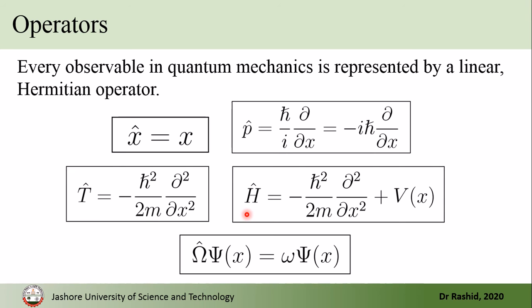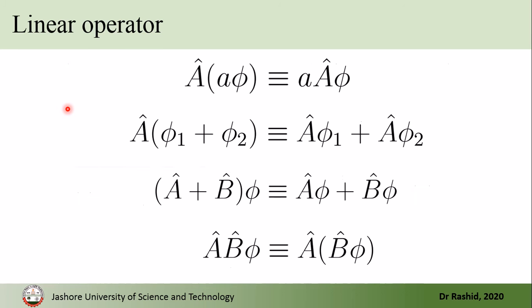To get information from the wave function, an operator omega-hat acts on the function and returns the eigenvalue, which is the physically observable quantity. For example, if it were the momentum operator, we would obtain the momentum as a number. These operators follow some important rules — they are linear and Hermitian.